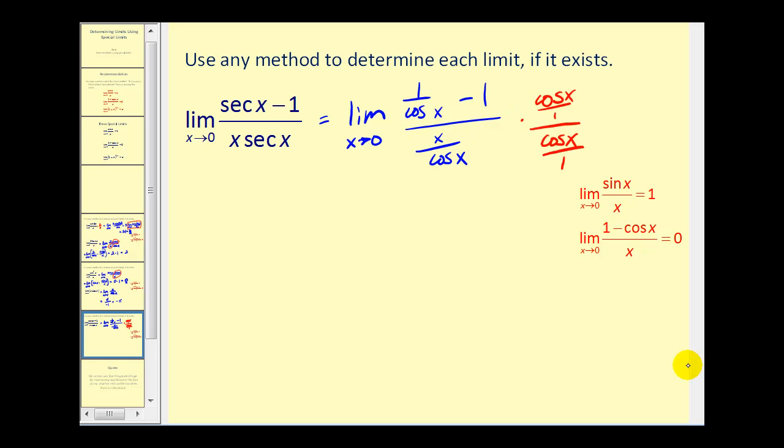We have cos(x) over one in both the numerator and denominator. Let's see what happens when we do this. Here we'd have 1 minus cos(x), and in the denominator we would have just x. And this does fit our special limit. So we know this is equal to zero.